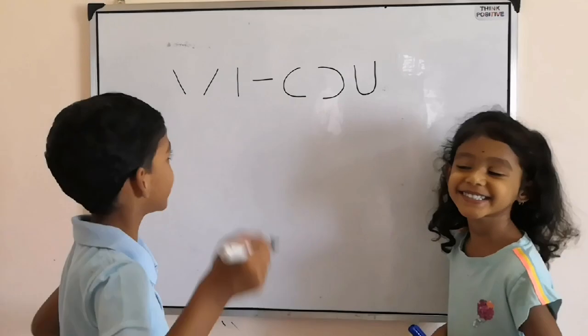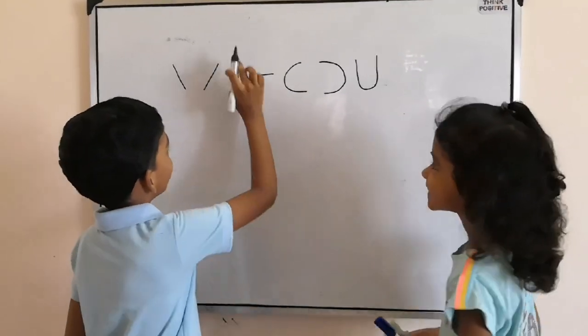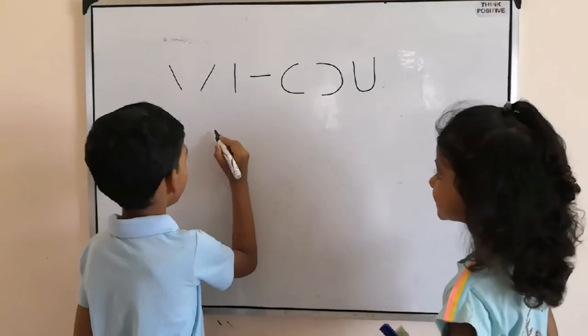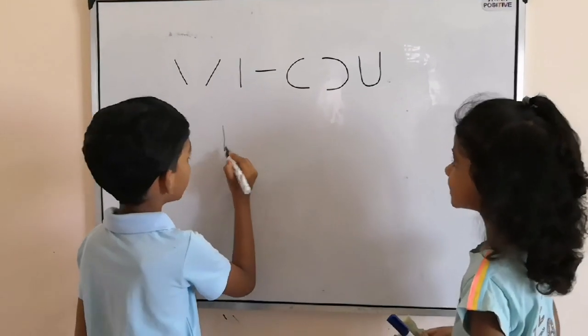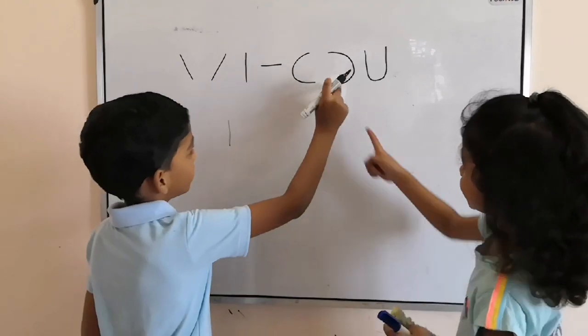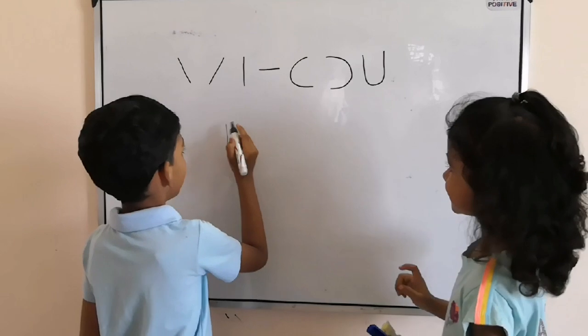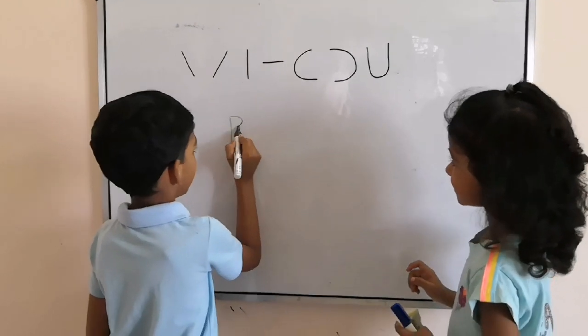I will write P. One standing line, then this way, this line.